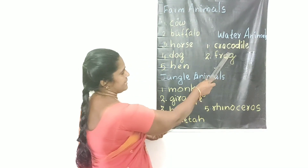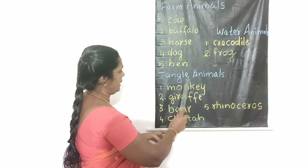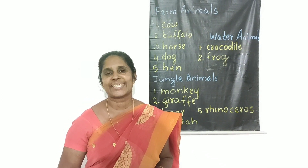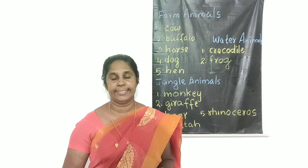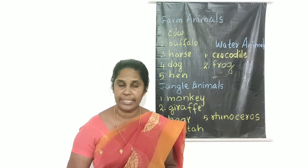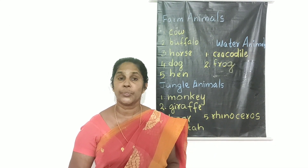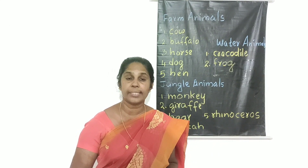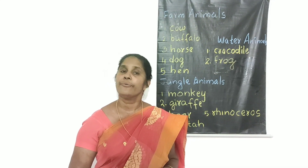These two animals are water animals. This is farm animals and these are jungle animals. In your textbook, page number 112-113, jungle animals, farm animals, and water animals are given. So you put a line and match — match to jungle, match to water, and match to farm.